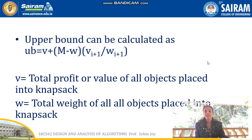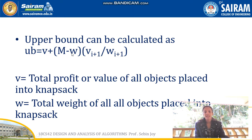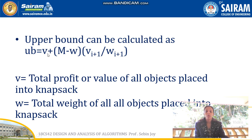How to find the upper bound? There is a formula: Upper Bound = V + (M - W) × (V_i+1 / W_i+1). To calculate the upper bound of the current state, we find the ratio of value to weight of the next item. Here, M is the capacity of the knapsack, W is the current total weight of all objects placed in the knapsack, and V is the current total profit of all objects placed in the knapsack.